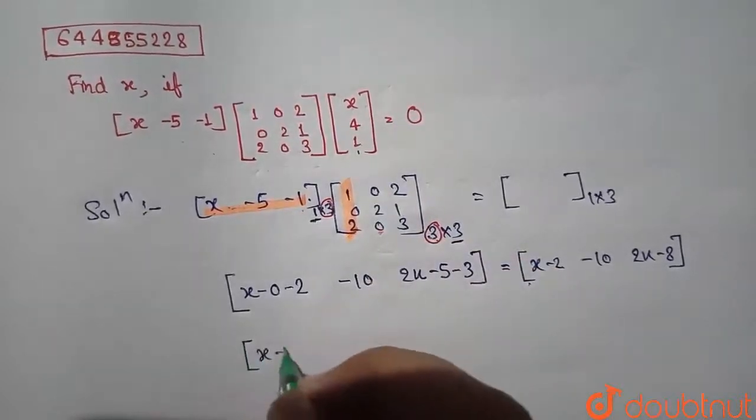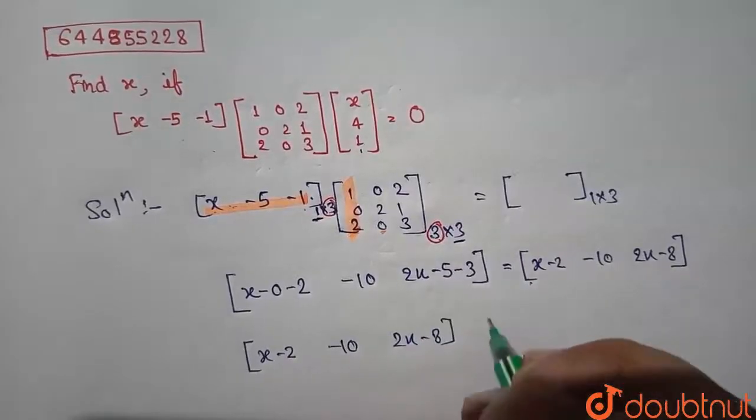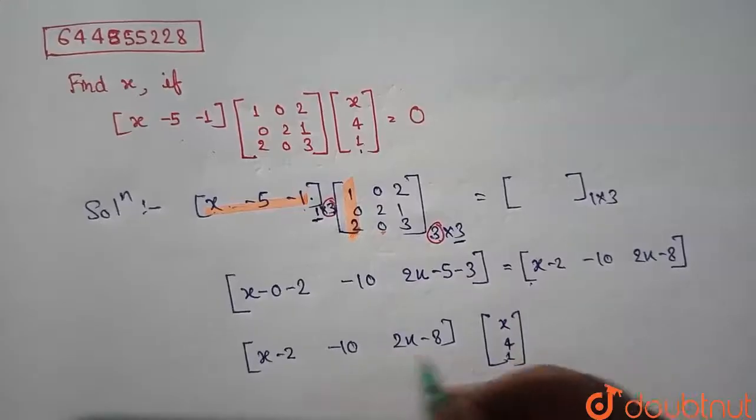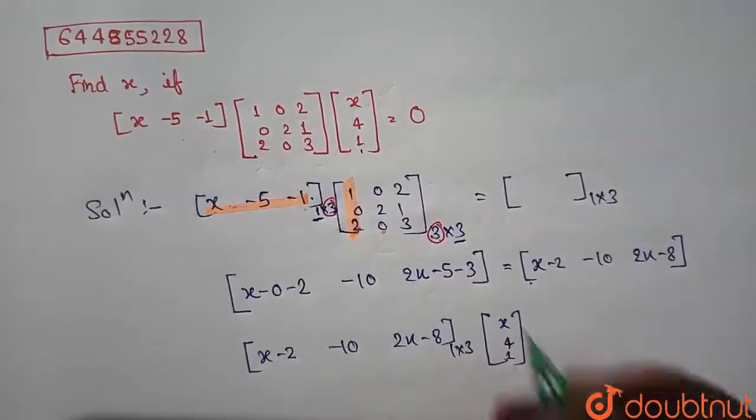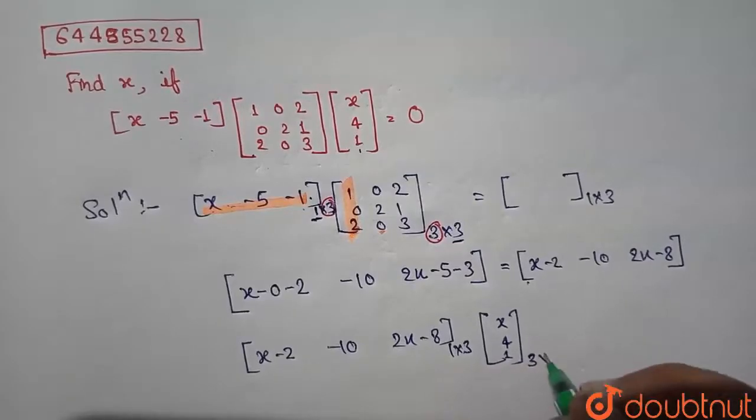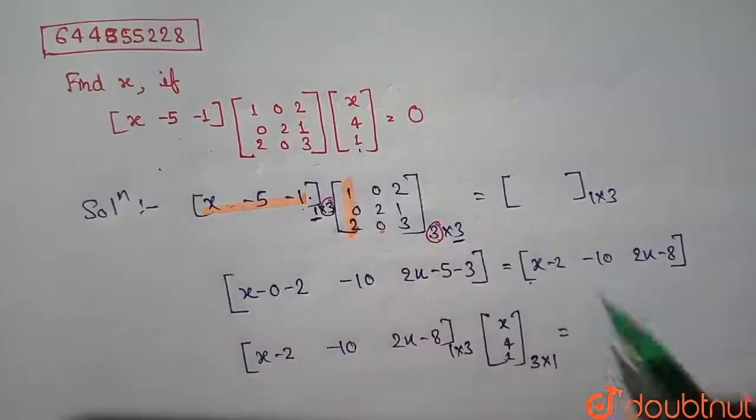So [x-2, -10, 2x-8] into [x, 4, 1]. Now order of this matrix is 1 by 3 and order of this matrix is 3 by 1, and given that the multiplication of whole is 0.